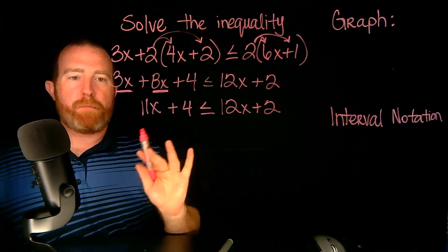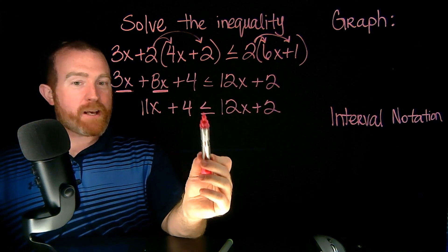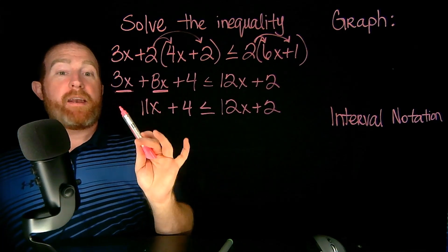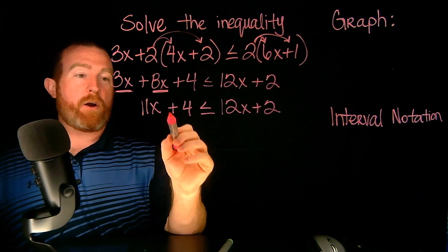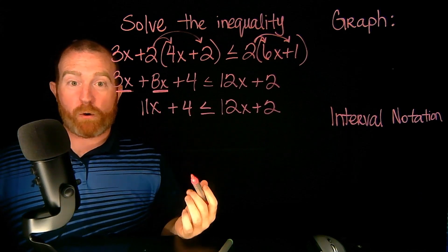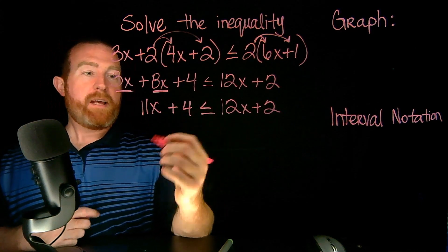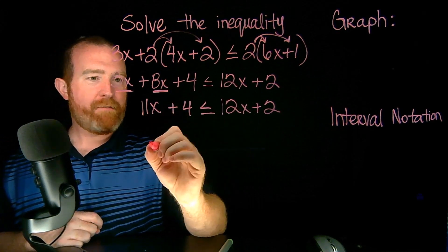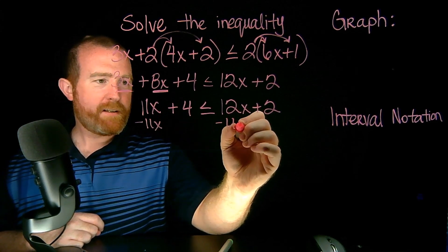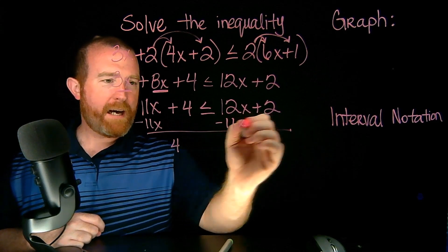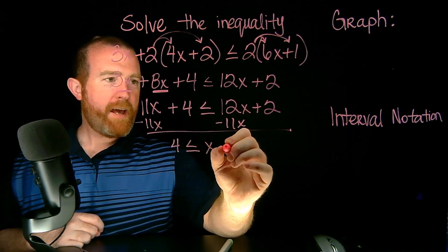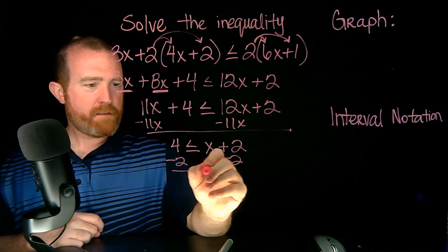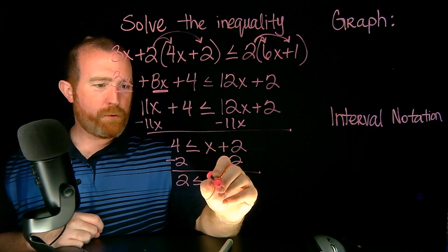Now I want to put the X's on one specific side. When you're dealing with inequalities, it's easiest to keep the X's on the left. You can do that, or some of you like the rule where you always move the smaller X so you're working with a positive X. So here, let's move the 11X since it's smaller. If I subtract 11X from both sides, this is going to give me 4, less than or equal to X plus 2. Now I can subtract 2 from both sides, and I get 2 is less than or equal to X.